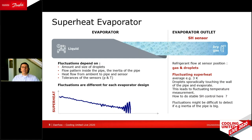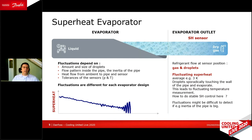That gives instabilities in the superheat measurement — it goes up and down whenever a droplet hits and evaporates. That's the point where we should stop reducing the superheat, because now we have stable droplets leaving the evaporator. We should increase a little bit again to come back to a stable superheat.